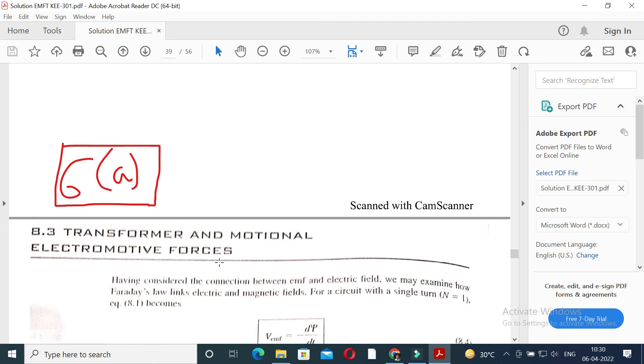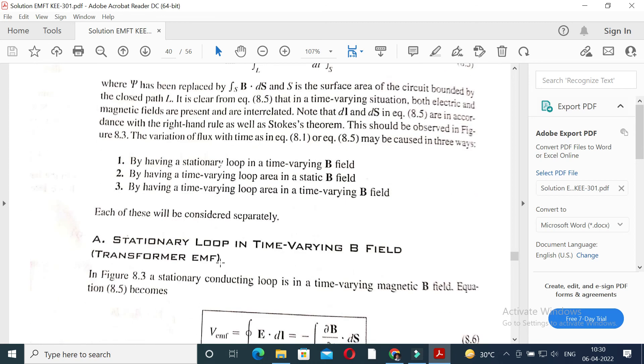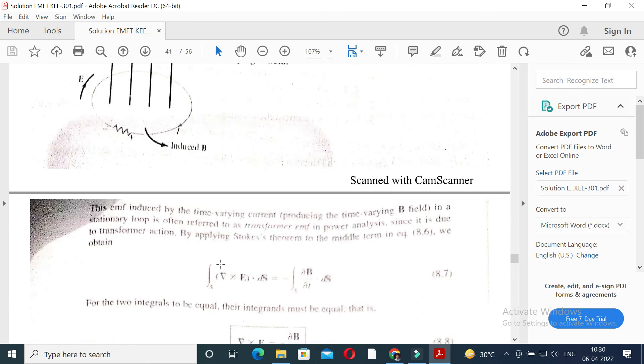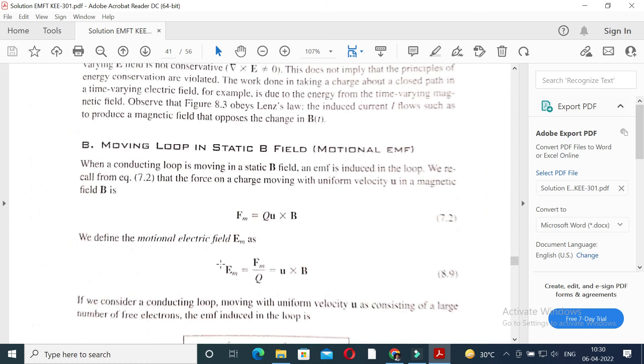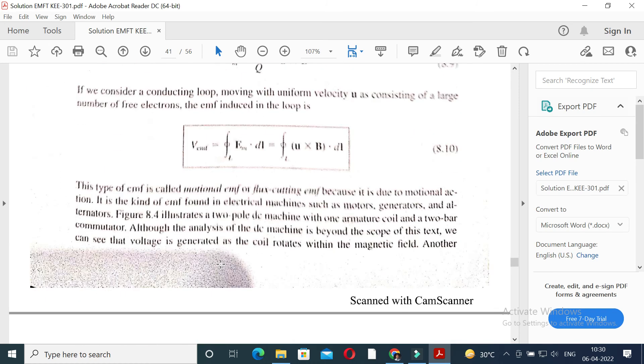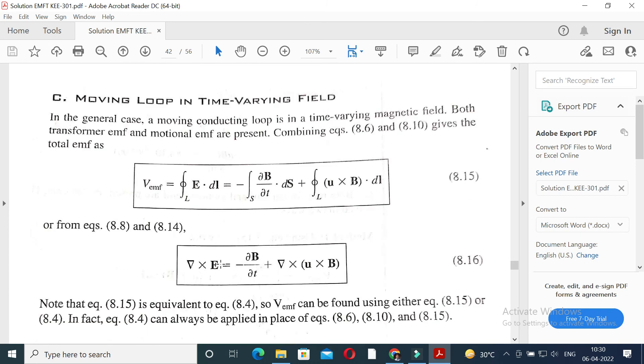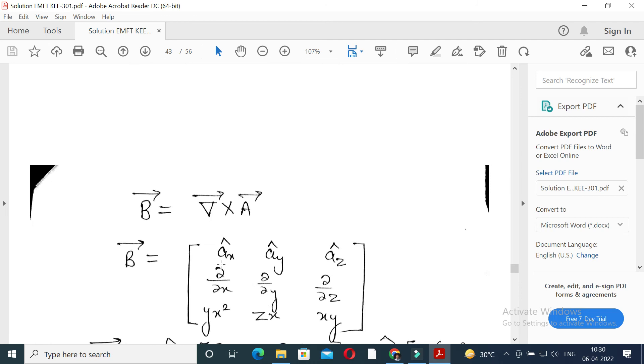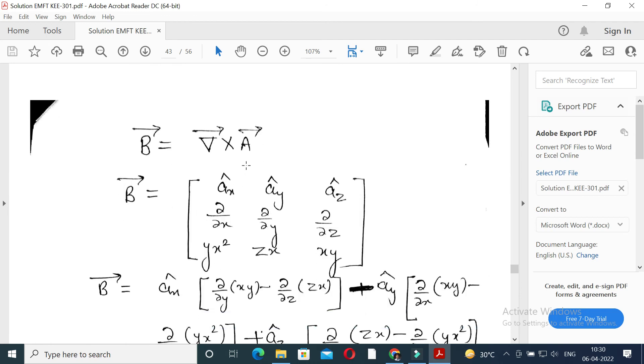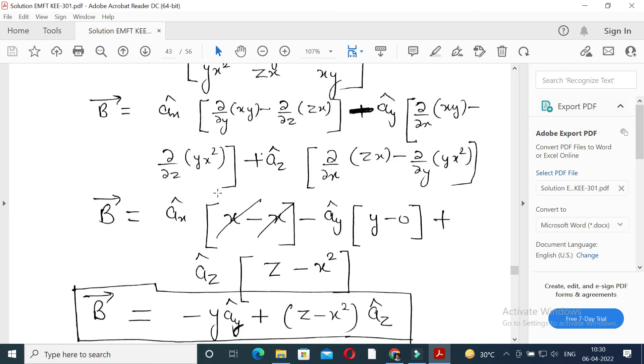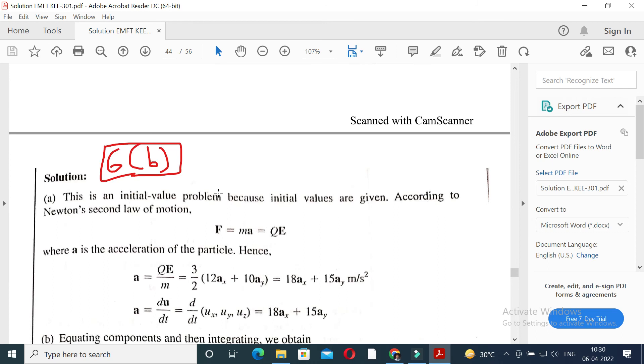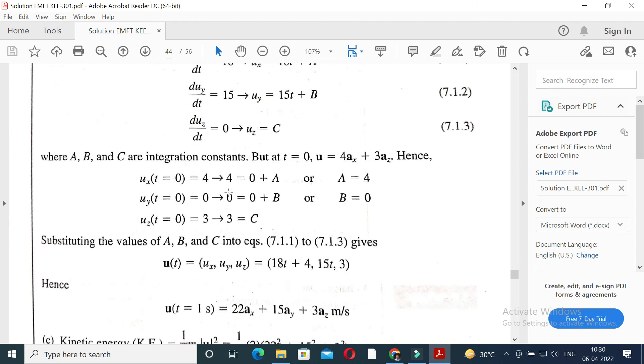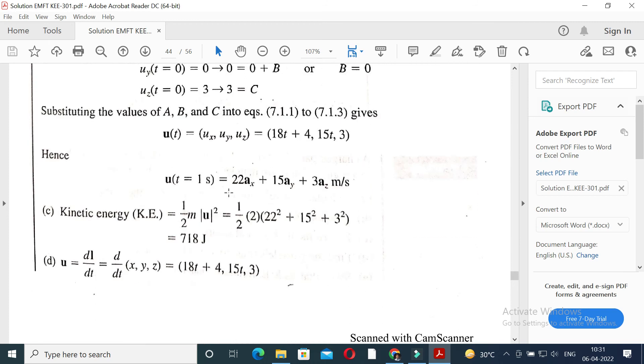Question number 6a: transformer and motional electromagnetic forces. And in second part A is given and B is required, so B is equal to del cross A, it is very easy. Number 6B is given related to above theory like acceleration, velocity, kinetic energy.